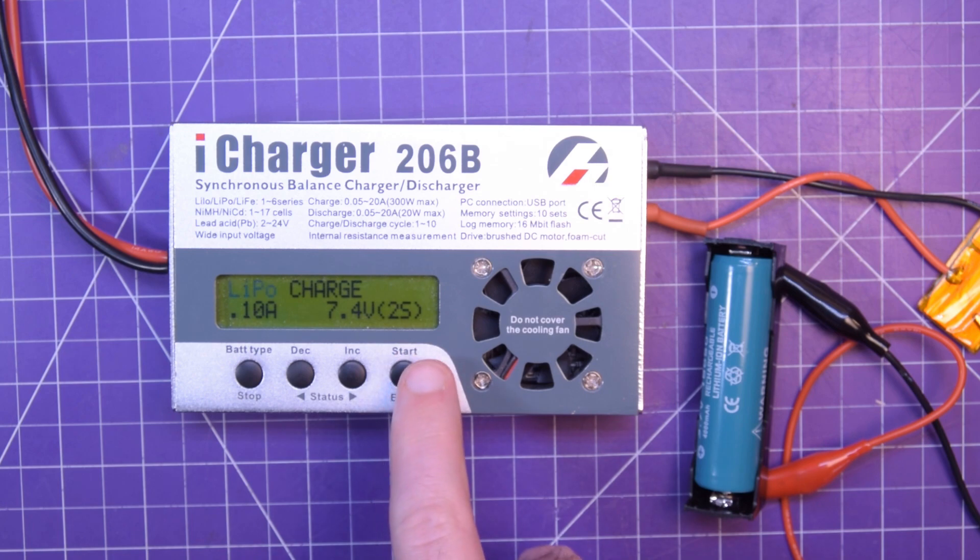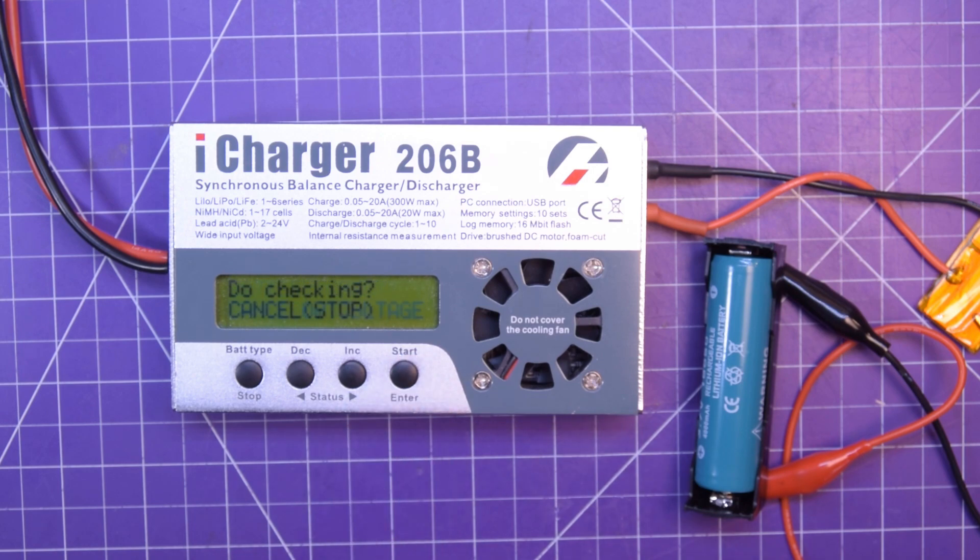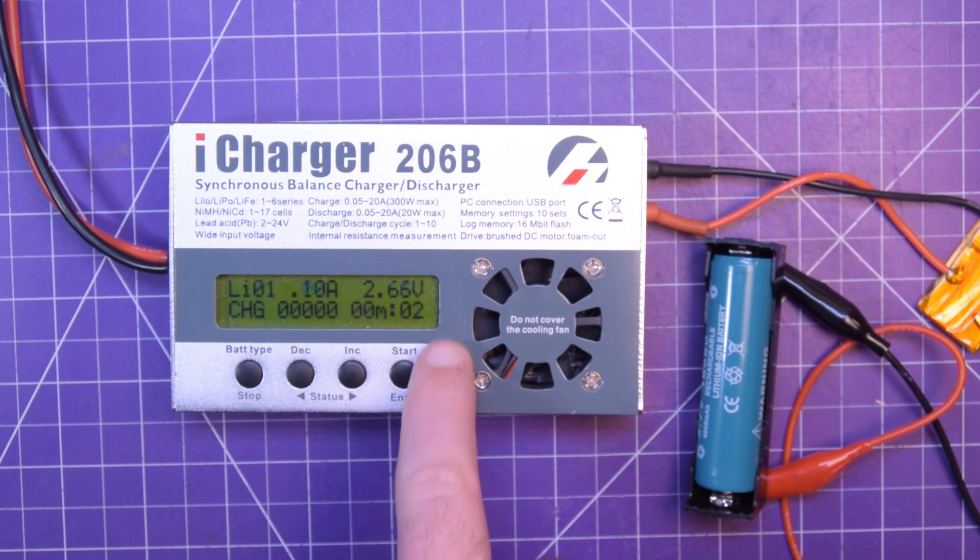So I'll just charge it here. 100 milliamps. Drop it to a single cell. Press and hold. Start. Low voltage. Do checking. Confirm.